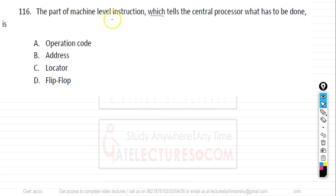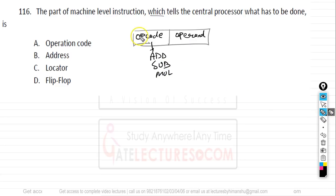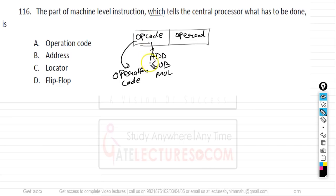Question number 116. The part of a machine-level instruction that tells the central processor what has to be done is the opcode (operation code). An instruction has two parts: opcode and operand. The opcode specifies the operation — add, subtract, multiply — while the operand provides the data. So opcode is the correct answer.